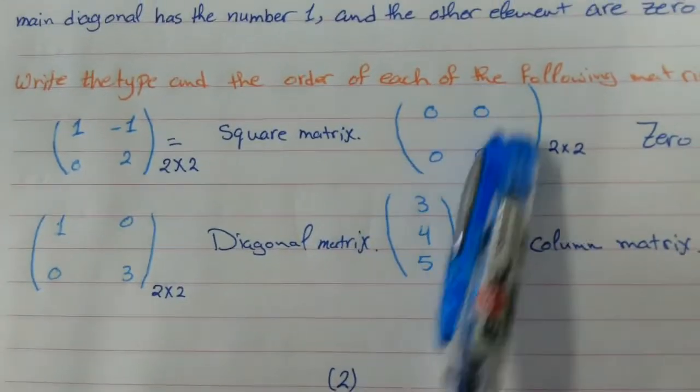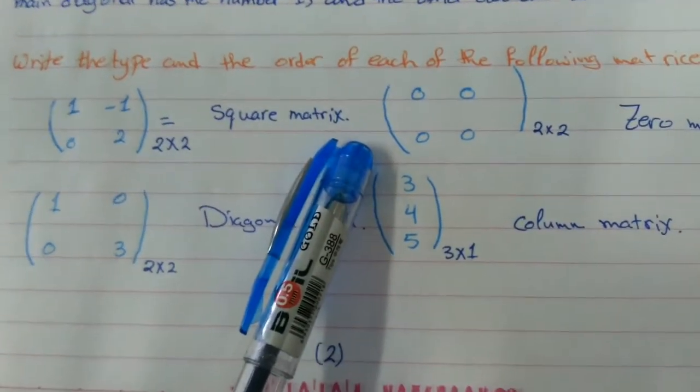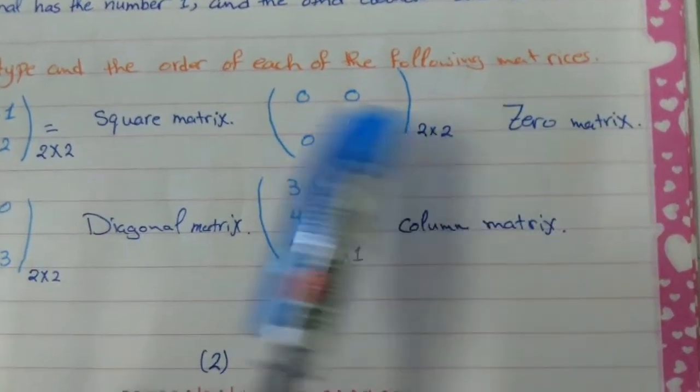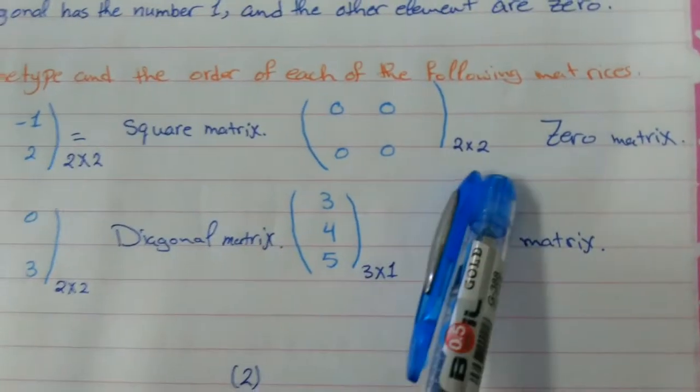The second one, all of the elements are zeros. We say that this is called what? Zero matrix. What about the order? 1, 2, so 2 times 2.